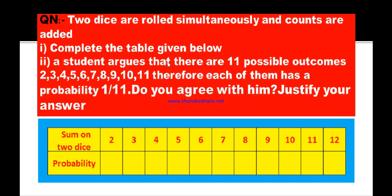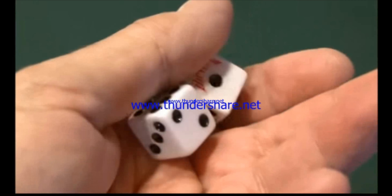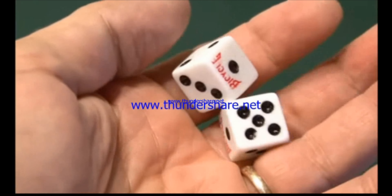A student argues that there are 11 possible outcomes: 2, 3, 4, 5, 6, 7, 8, 9, 10, and 11. Therefore, each of them has a probability of 1 by 11. Do you agree with him and justify your answer? Here are the dice.